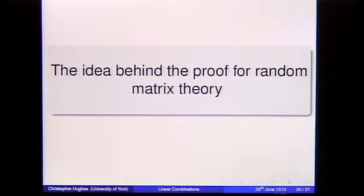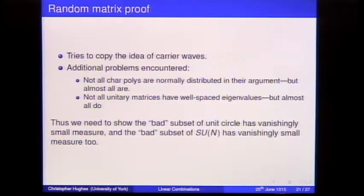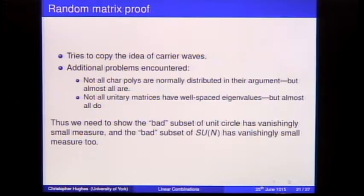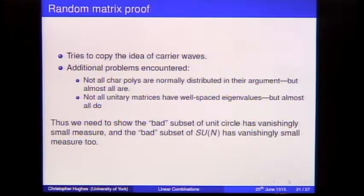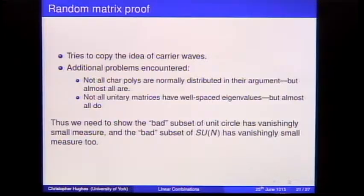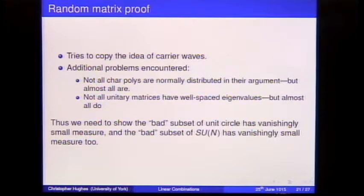How do we develop the carrier wave idea into a proof in random matrix theory? The problems we encounter: not all characteristic polynomials are normally distributed — almost all are, but not all. Not all unitary matrices have well-spaced zeros — almost all do, but the identity matrix has all zeros in the same place. It's very rare, but I have to account for it. This bad structure in SU(N) and the bad structure over [0, 2π] must both be shown to have very small measure.